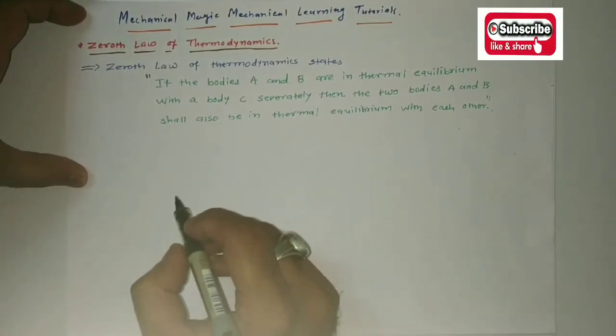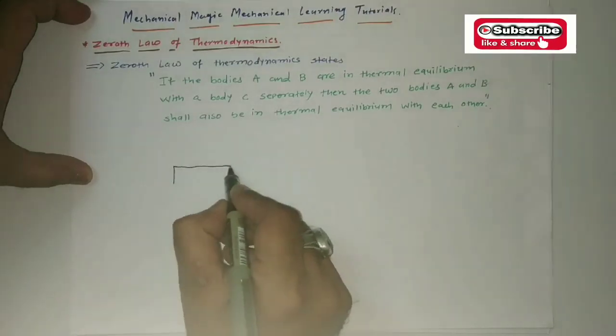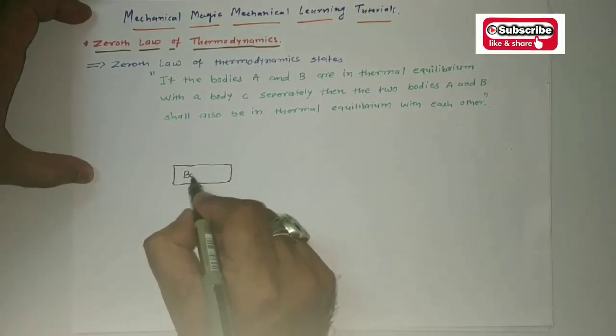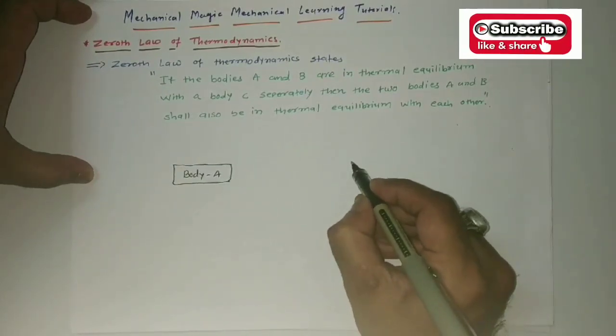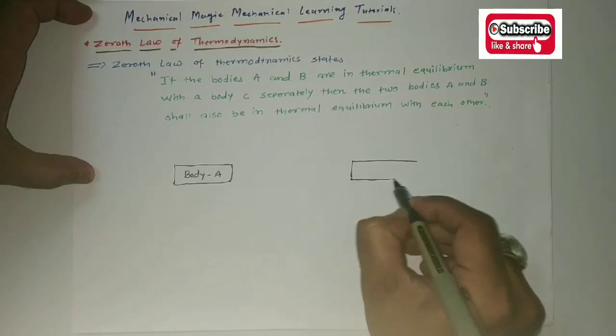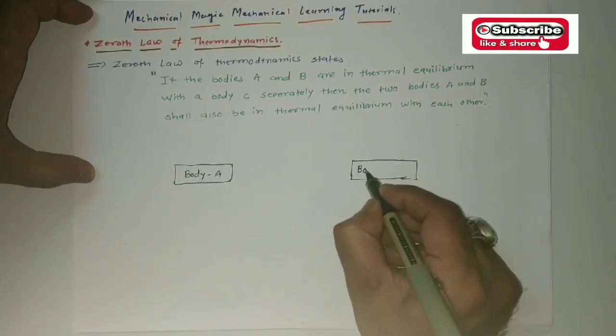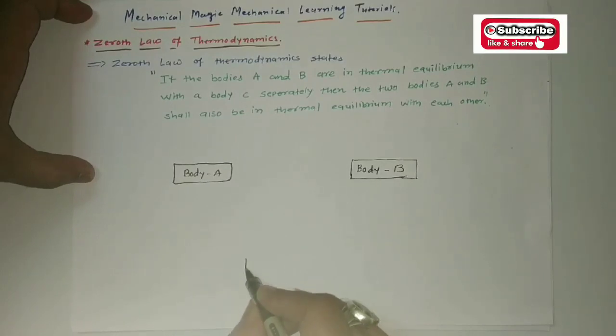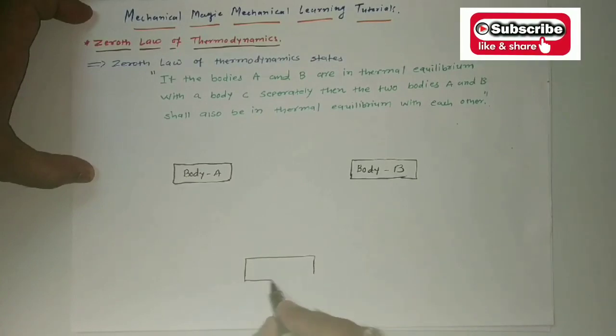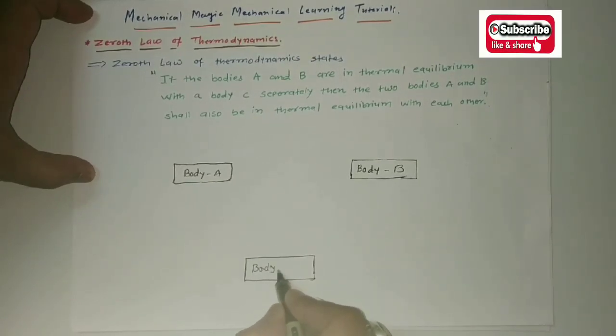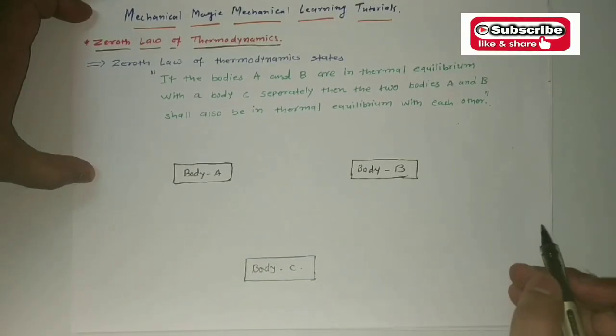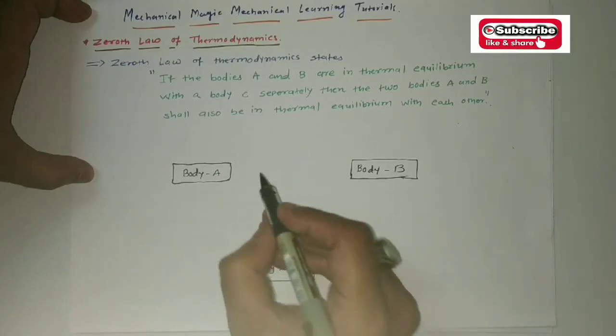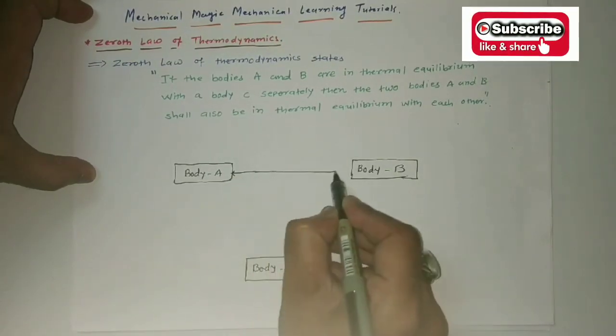So here are three different bodies: body A, here it will be body B, and somewhere here you can see body C. As from the statement, if the bodies A and B are in thermal equilibrium...